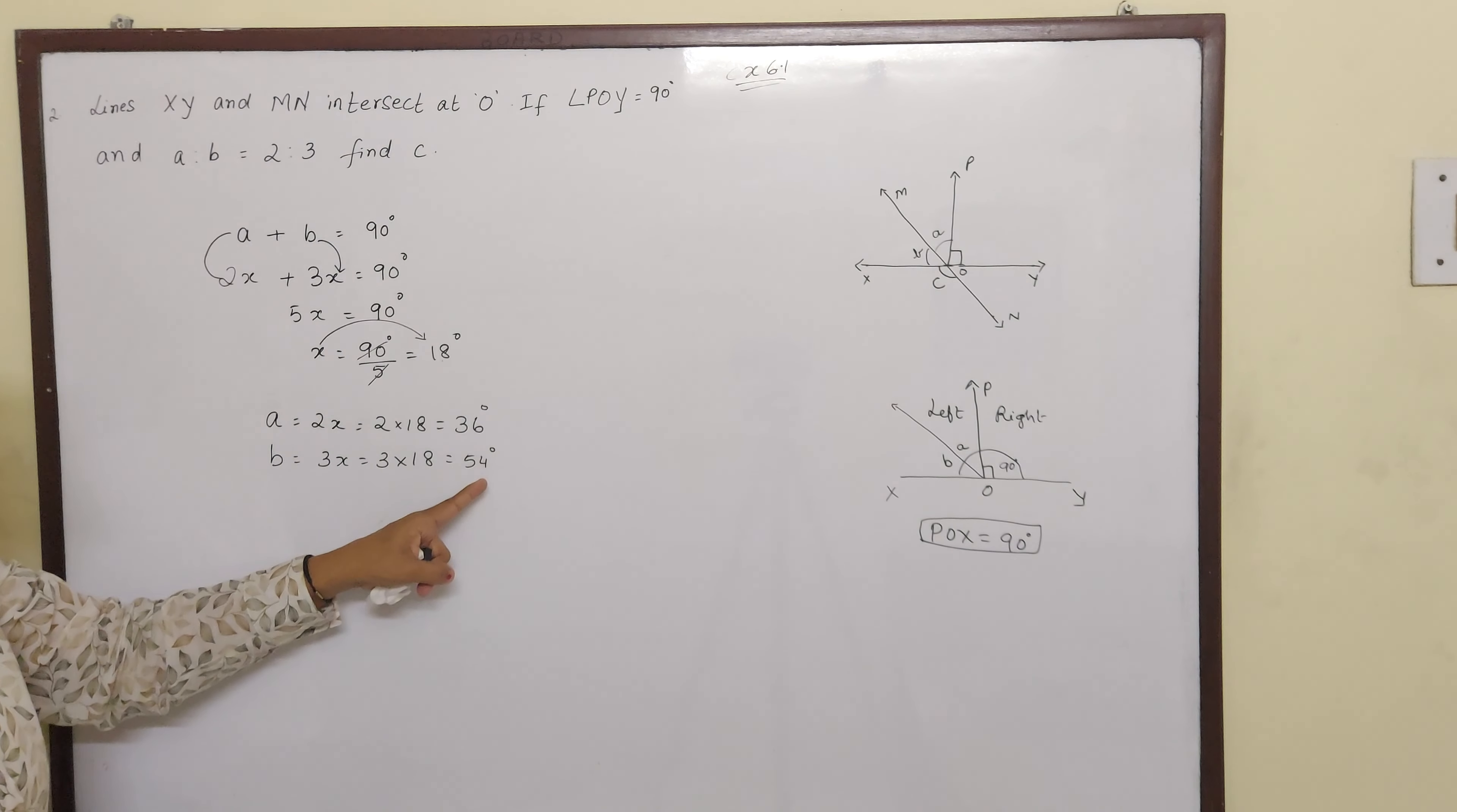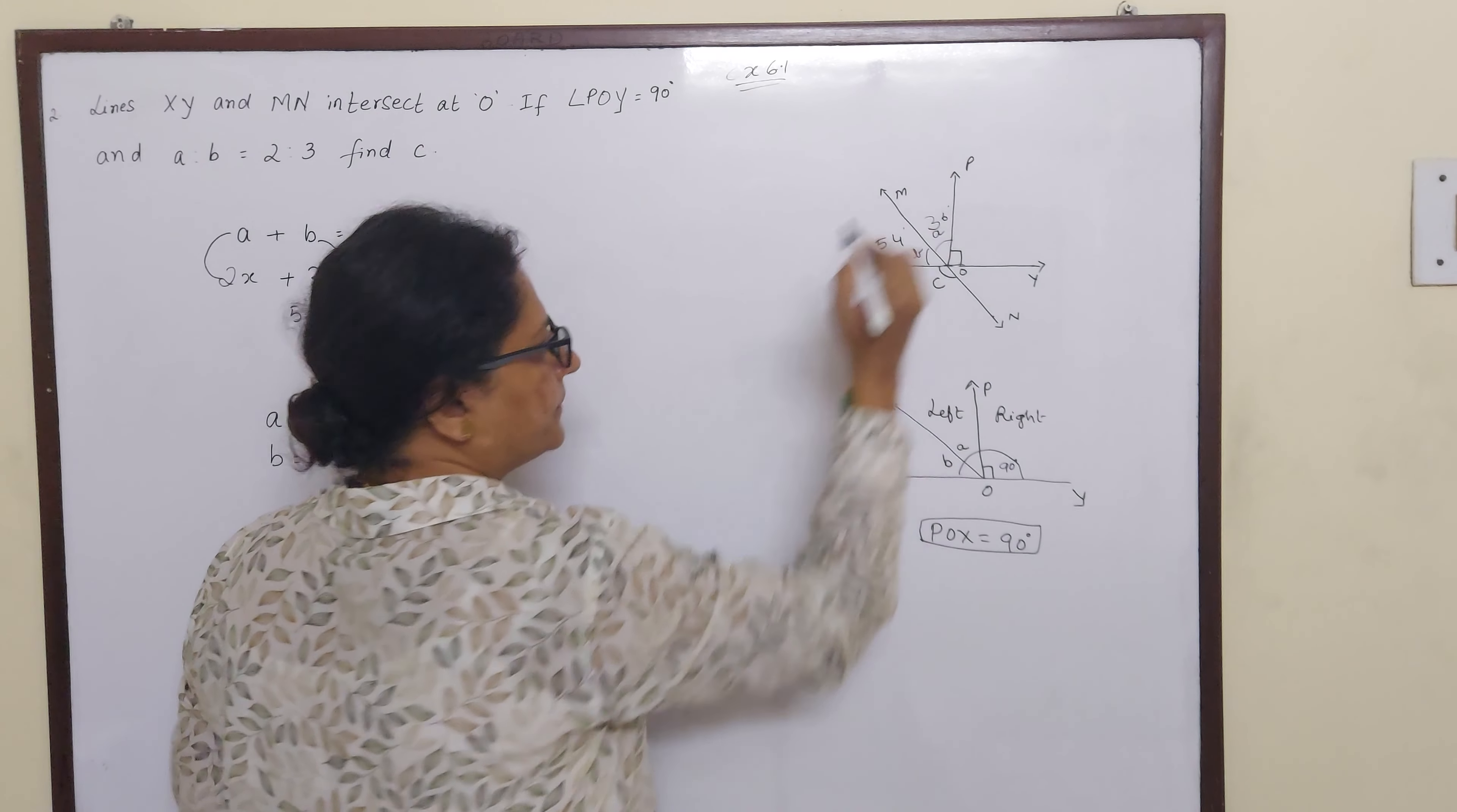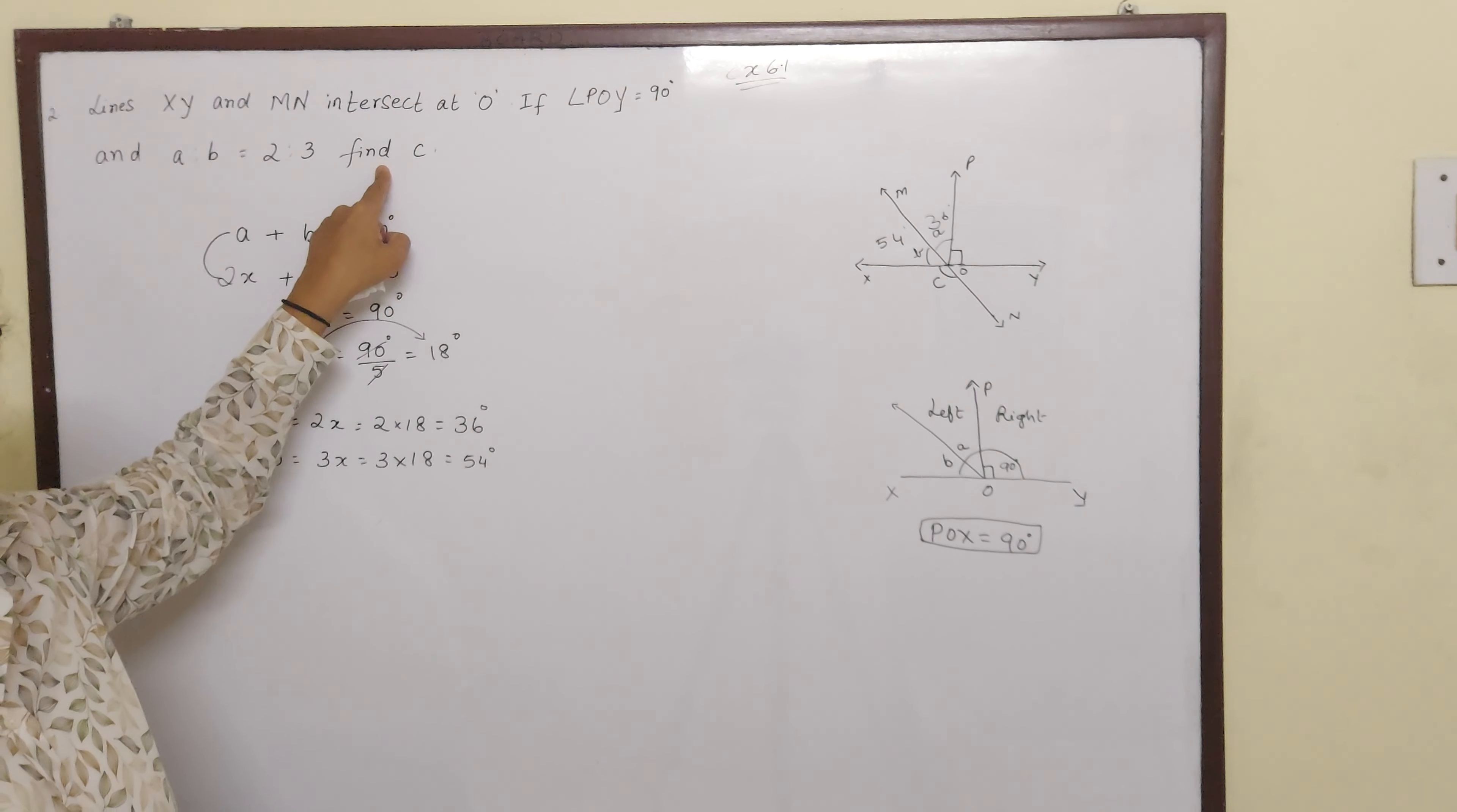So we have got A as 36 degrees and B as 54 degrees. But they have asked us to find C.